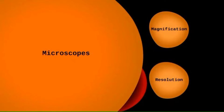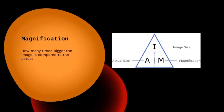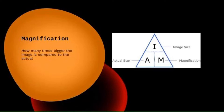Two very important concepts when talking about microscopes are magnification and resolution. Magnification is how many times bigger an image is compared to the actual real-life specimen you're viewing. We can calculate this using: image size equals actual size times magnification. For example, if the image is 10 centimeters and the actual object is 1 centimeter, we do 10 divided by 1, giving us 10 times magnification.